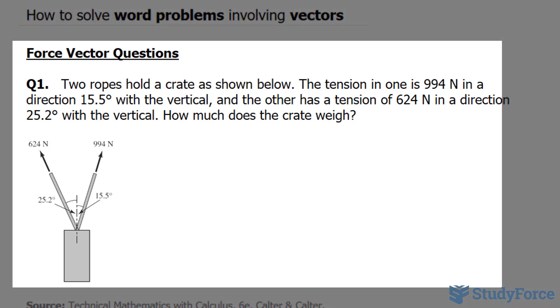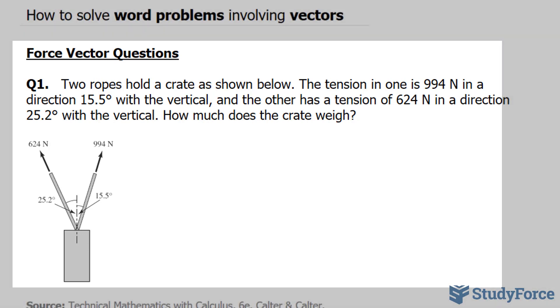In question number one, two ropes hold a crate as shown below. The tension in one is 994 newtons in a direction 15.5 degrees with the vertical, and the other has a tension of 624 newtons in a direction of 25.2 with the vertical. How much does the crate weigh?